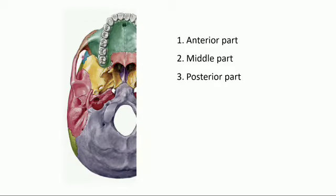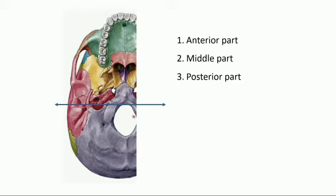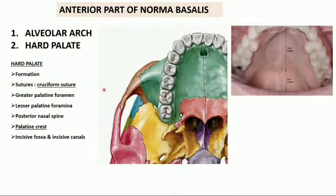There are several points to remember when learning the norma basalis, but it is made easy by dividing the entire base of the skull into three parts: the anterior part, the middle part, and the posterior part. The middle part is the area between an imaginary line passing through the anterior margin of the foramen magnum and behind the hard palate. The part behind this imaginary line is the posterior part.